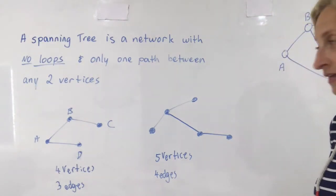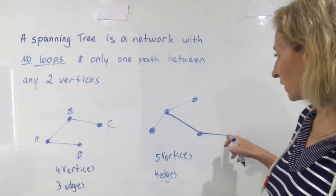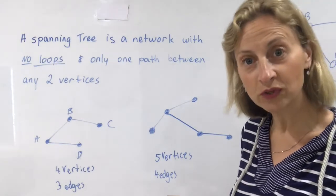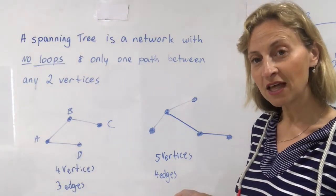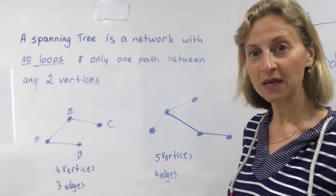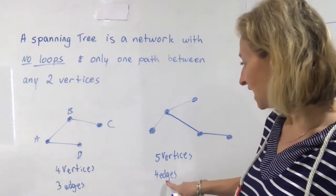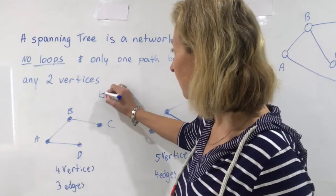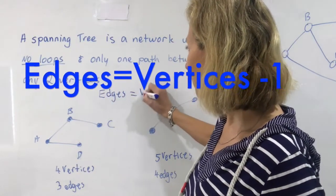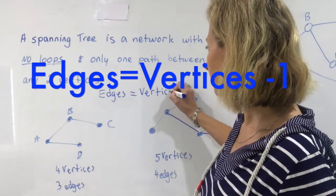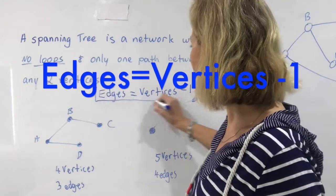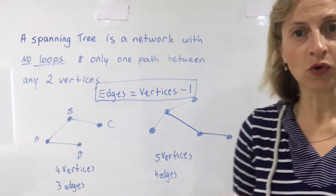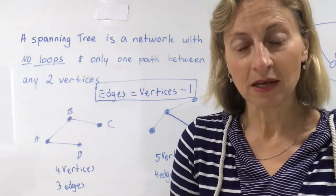Some of you may realize that because we never ever join the last point up with anything else, otherwise there would be more than one route to get from two of the vertices, there will always need to be one less edge than vertex. So we have a little rule that says that the number of edges will equal the number of vertices minus one.